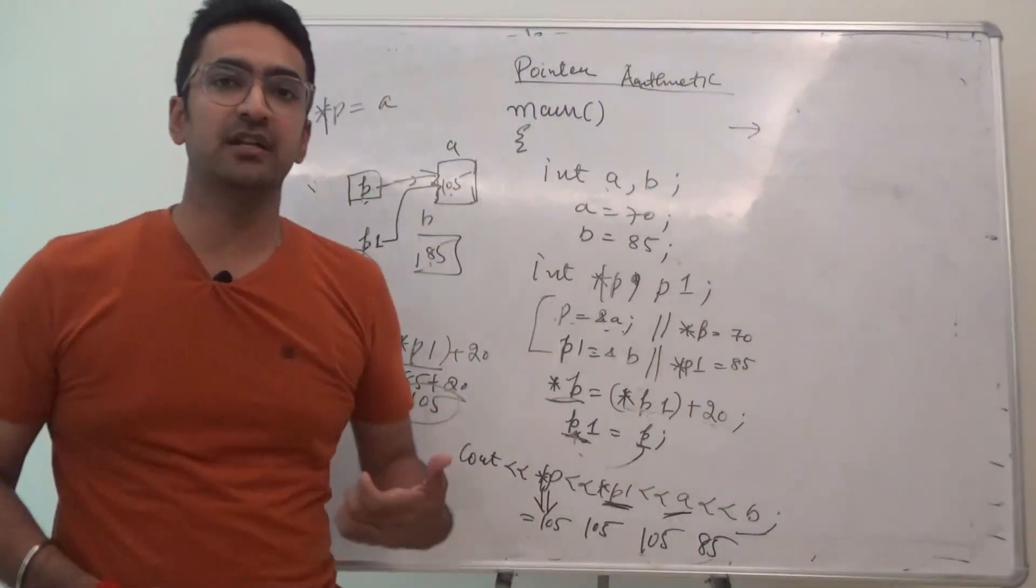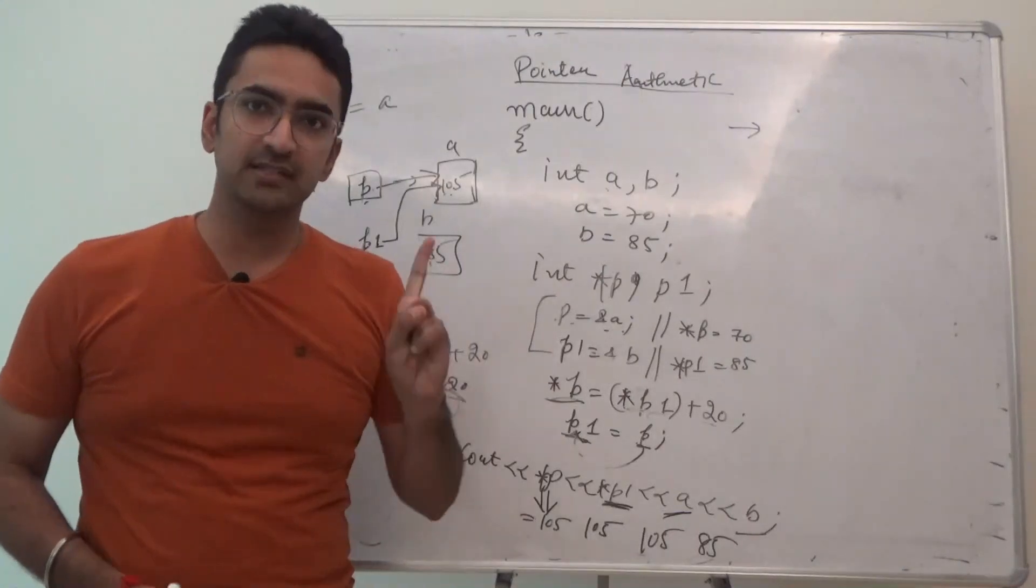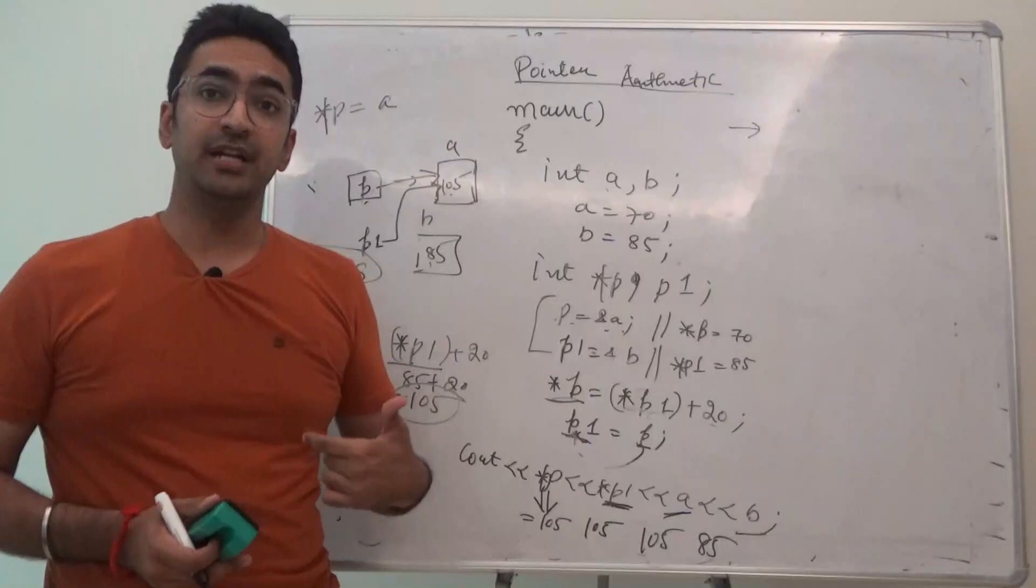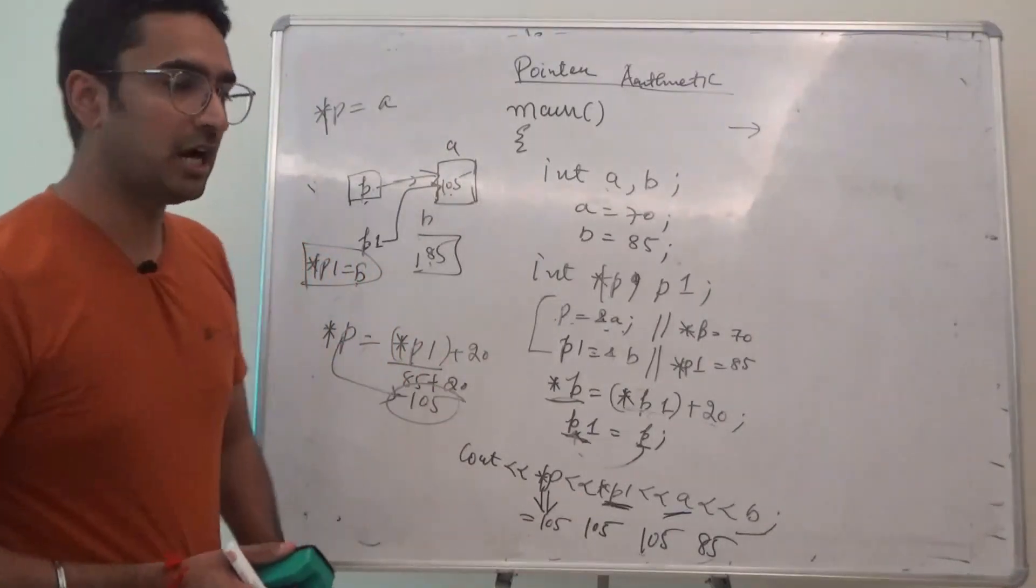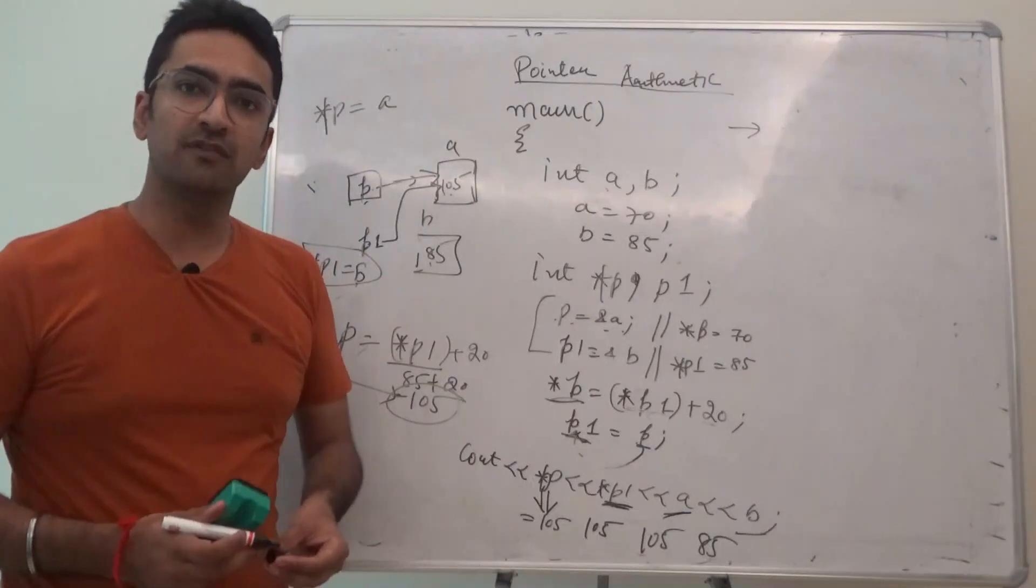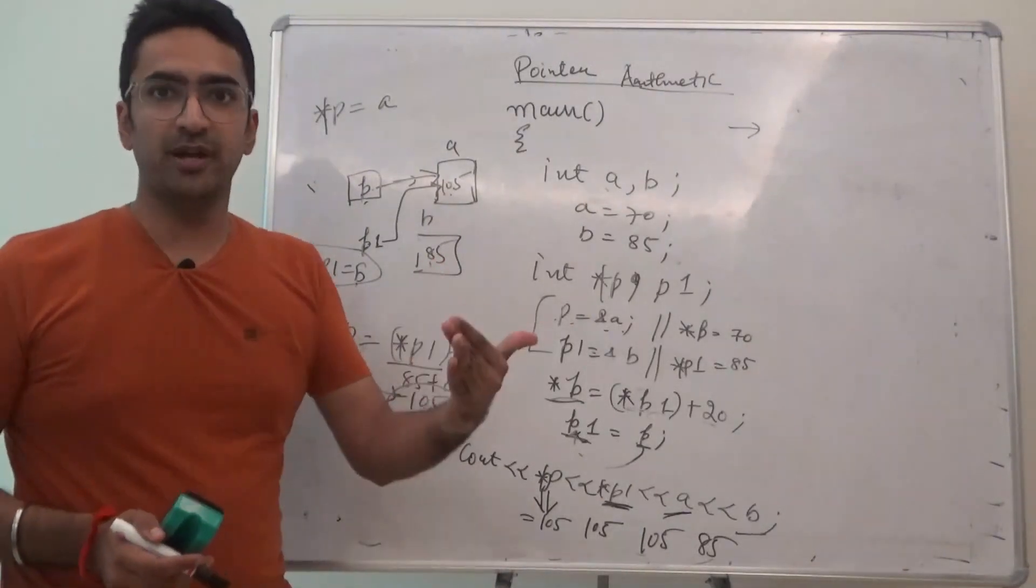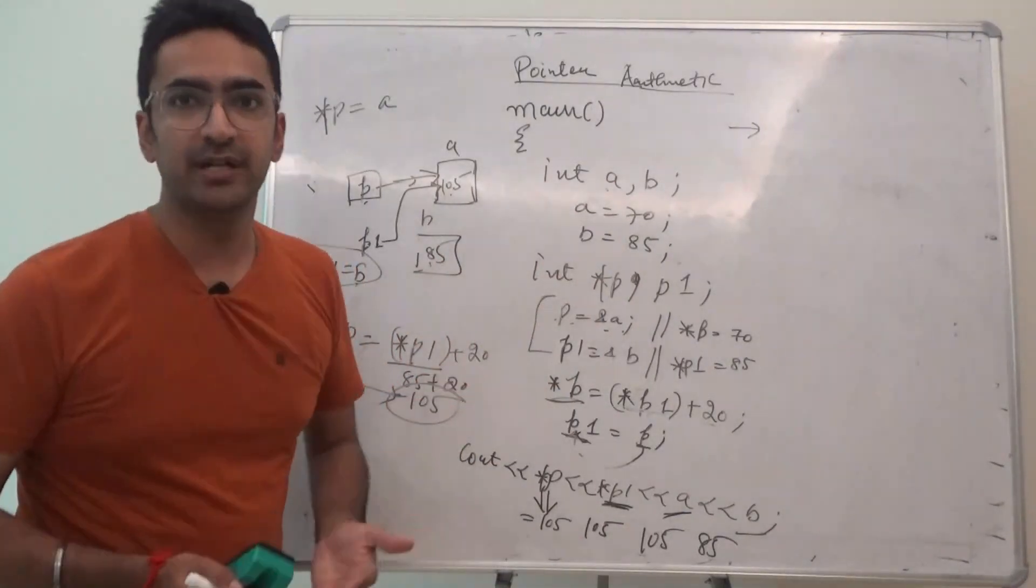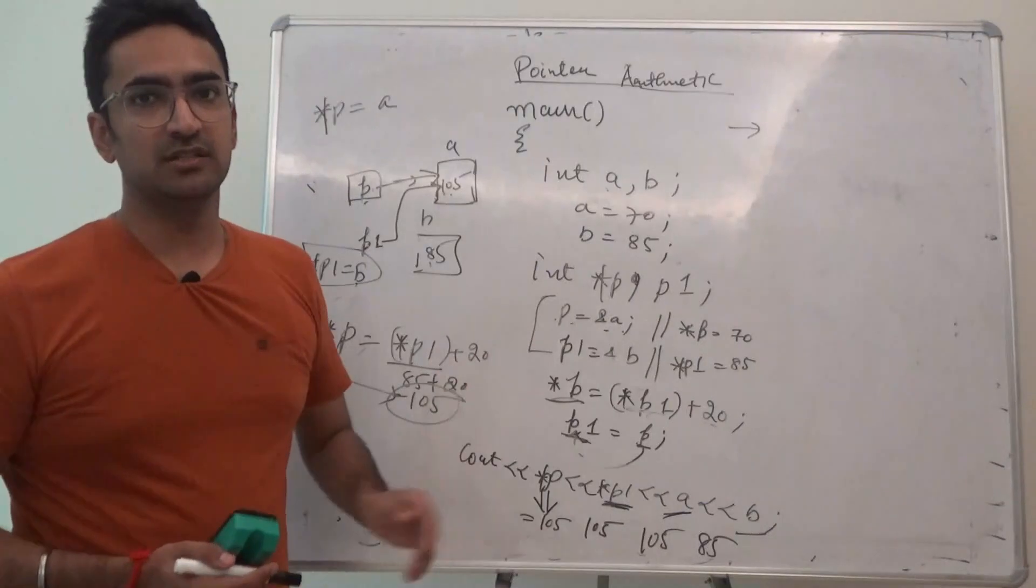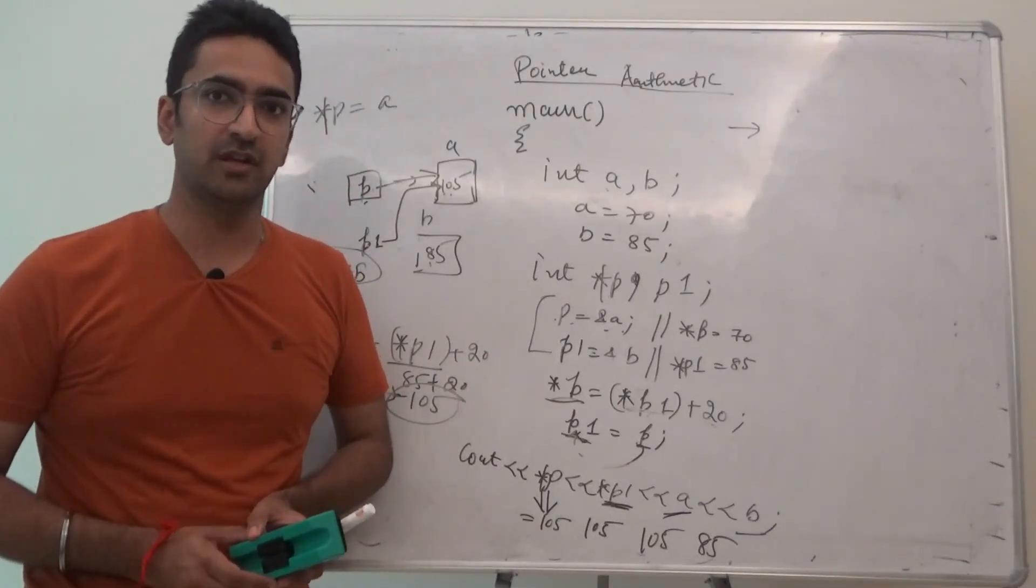This is how pointer arithmetic works. Direct addition of integer to pointers is not possible. We can always access them using a dereferencing operator. And, how this answer turns out to be this. We can always assign a pointer to another pointer. Because, that pointer will point to the previous pointer where pointer is pointing. So, if you like this video, please like, share and subscribe. Thank you very much.